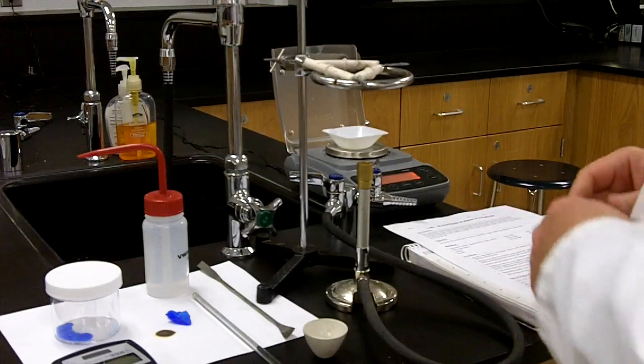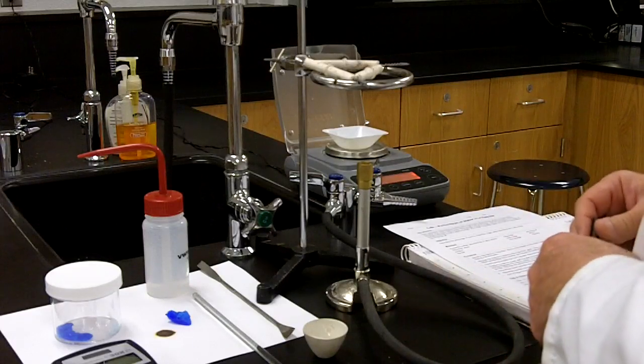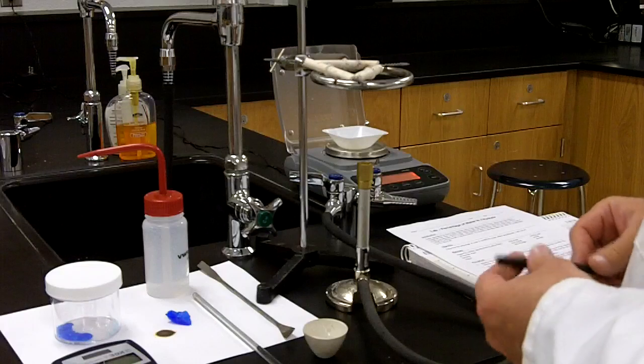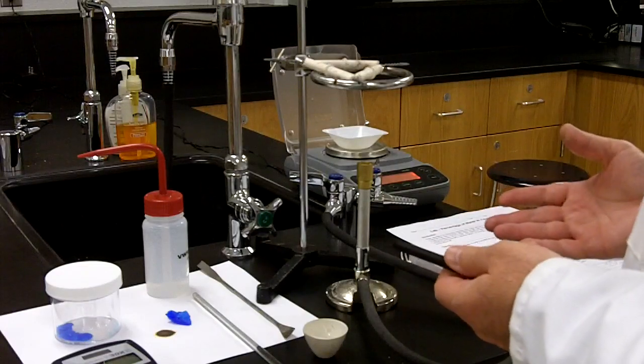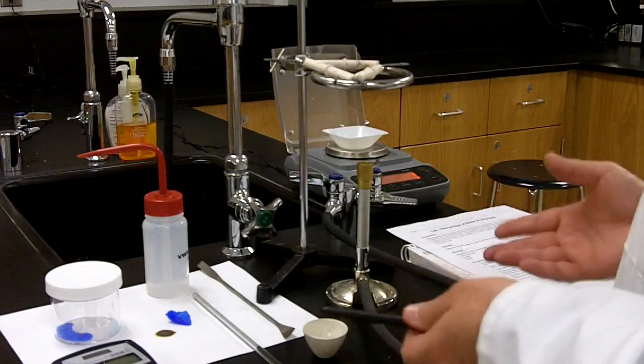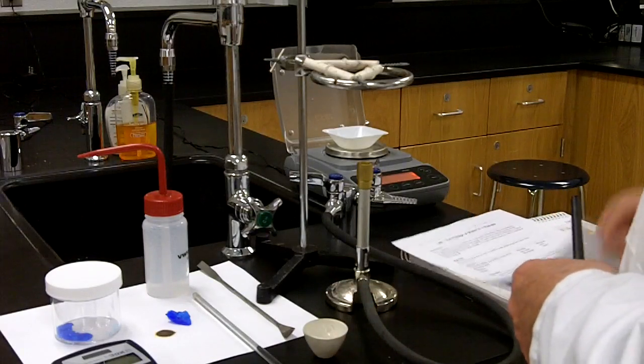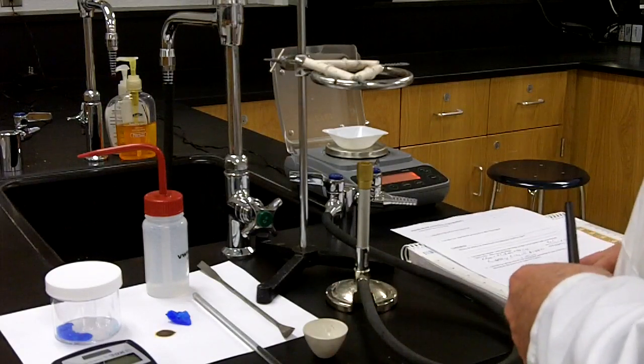And while we're doing that, we're going to do a couple of calculations. One of the calculations that we want to do is we want to make sure that we know how to do the calculation for determining the amount of water in the copper sulfate pentahydrate. So there are some questions on the back of the sheet that require that we do that.